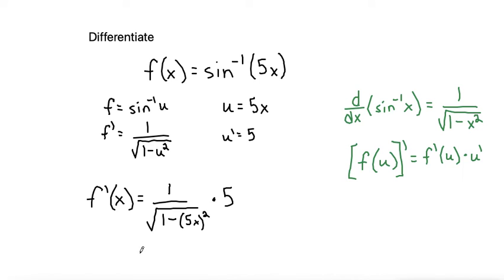So simplifying just a bit, I'll write it over here, put the 5 on top to make 5 over the square root of 1 minus 5x squared is 25x squared, which would be my final answer.